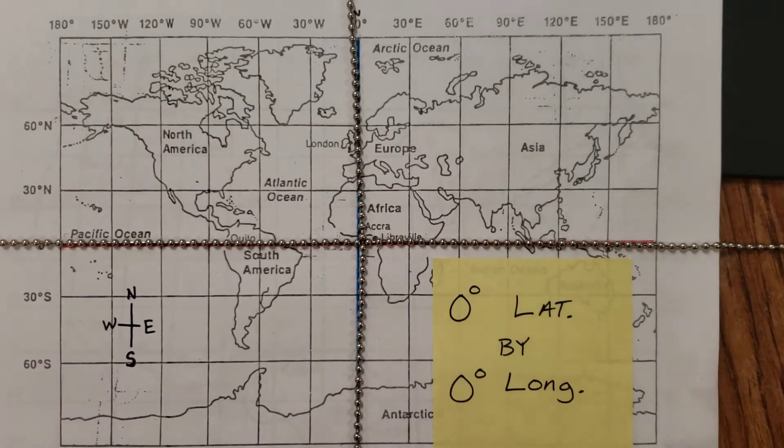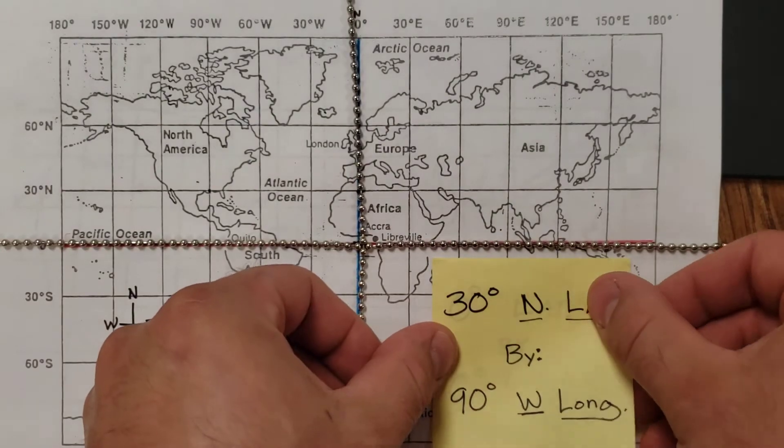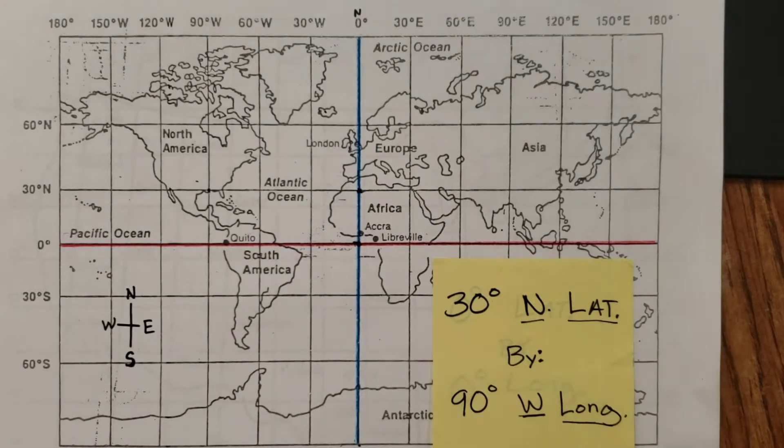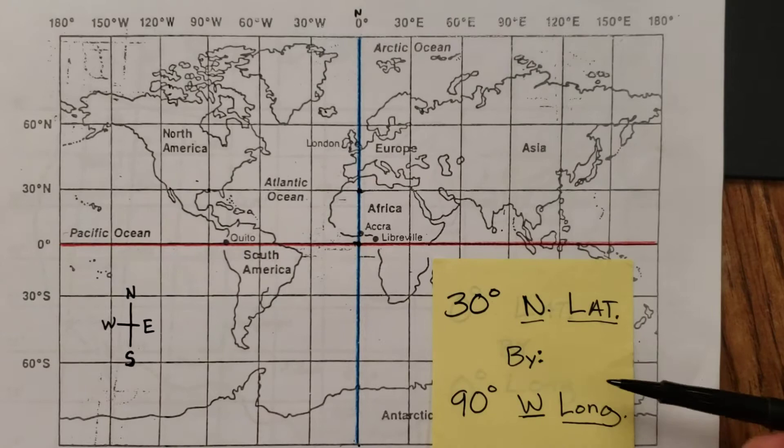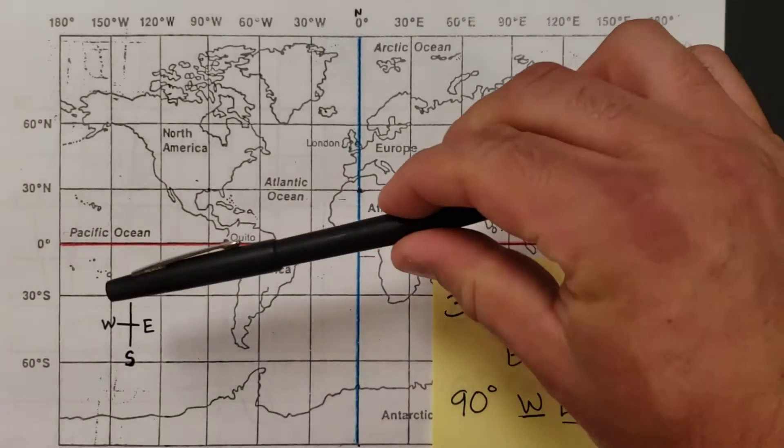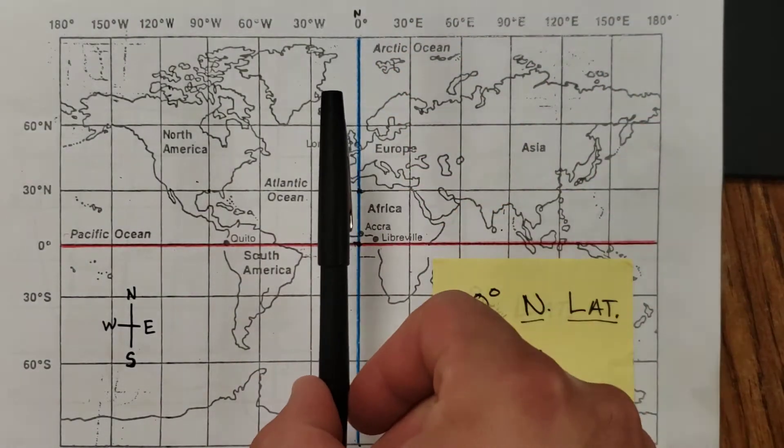Now the next one we're going to do is 30 degrees north latitude by 90 degrees west longitude. So it doesn't really matter which one you do first. You can do longitude first or let's do longitude first. First of all, I'll start at the end here and think what is longitude? Is this longitude? Nope. That's the ladder. That's latitude. This is longitude.